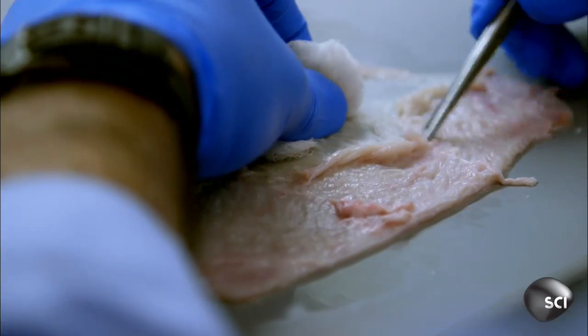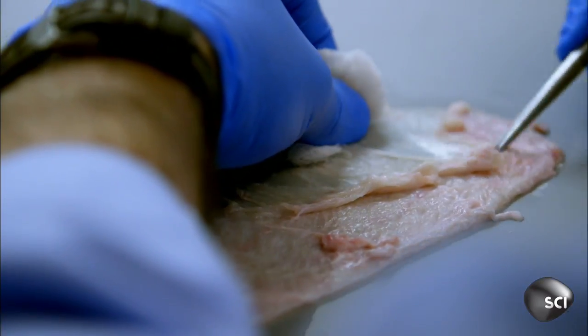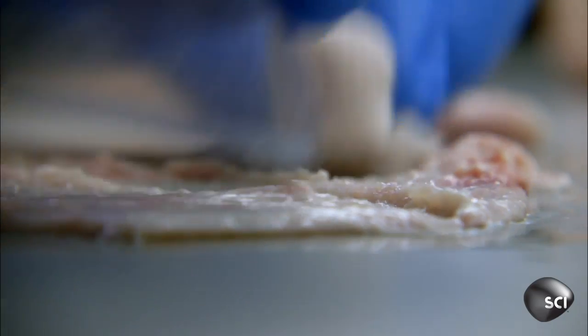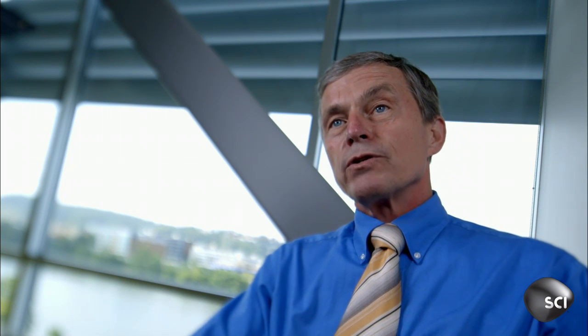The extracellular matrix is like a scaffold that cells set up house in. All animals have it, including humans. The extracellular matrix is the glue that holds cells together in every tissue and organ of your body. And it gives instructions to the cells and the cells in turn give instruction to the matrix.